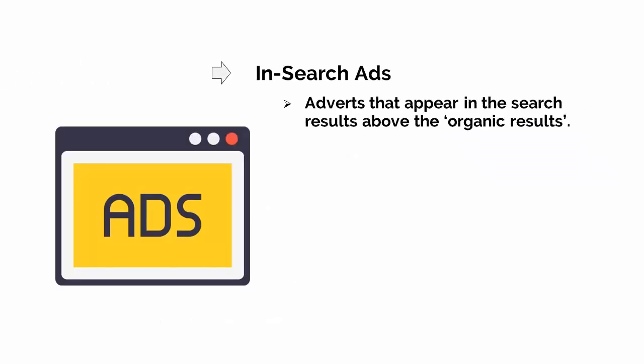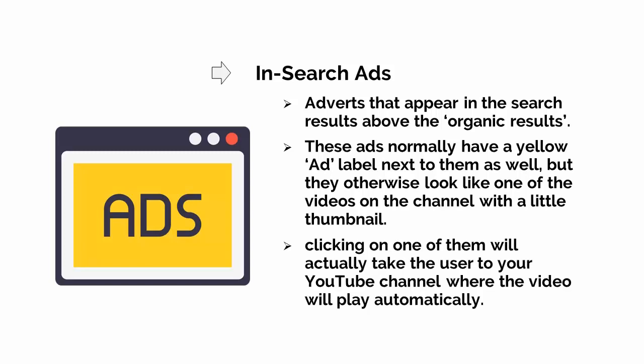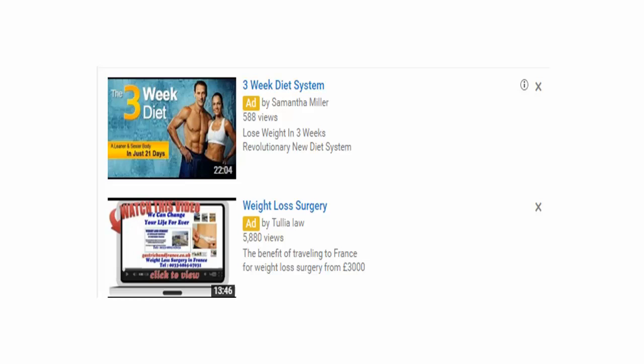InSearch ads, meanwhile, are adverts that appear in the search results above the organic results. These ads normally have a little ad label next to them, but otherwise they look like one of the videos on the channel with a little thumbnail. InSearch ads behave a little differently from other videos on YouTube and from other adverts — clicking on one of them will actually take the user to your YouTube channel where the video will play automatically. You can't link this to your landing page, unfortunately, so it's less suitable for making direct sales, but much more suitable for creating a large number of subscribers and helping you to build trust and authority with your brand. This is your chance to demonstrate the kind of value and information that you're able to deliver and to show off all the other videos that you have on your channel.